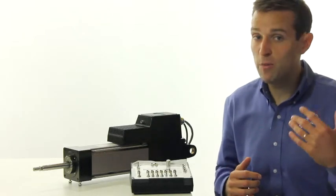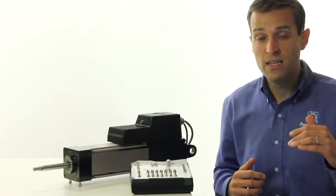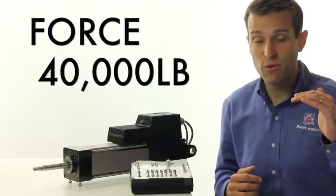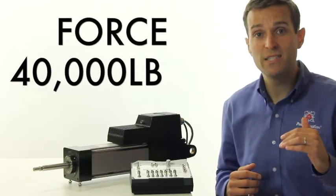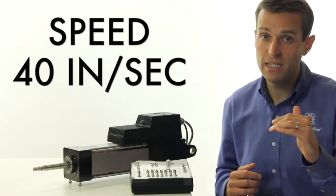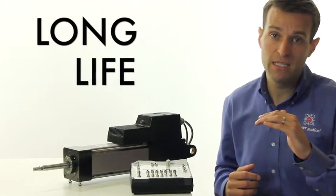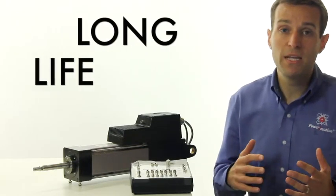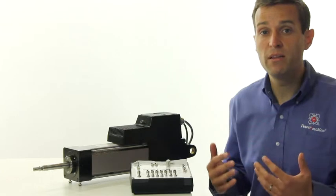So what does a roller screw actuator offer your application? The physical performance of a hydraulic cylinder, such as forces as great as 40,000 pounds, speeds as fast as 40 inches per second, and very long life expectancy.